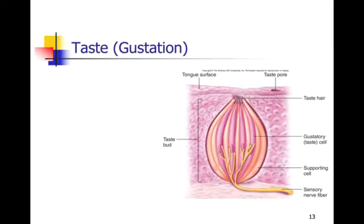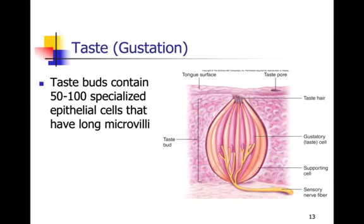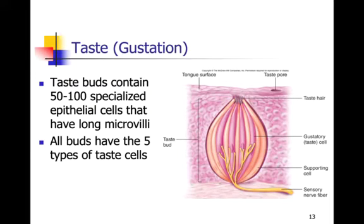Now, taste — gustation, not gestation, which is pregnancy. In a taste bud, you have 50 to 100 specialized epithelial cells, and those all project long microvilli out the top, which we call taste hairs — they're not really hairs, they're microvilli. They are part of the specialized epithelial cells within your taste bud. Within each and every taste bud, you will have all five types of taste cells — we can taste five different categories, and each taste bud will contain all five taste cells.